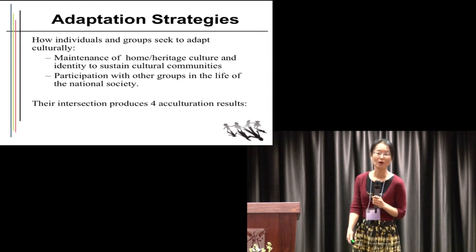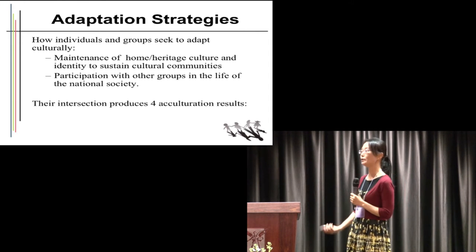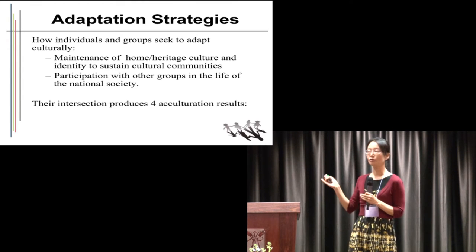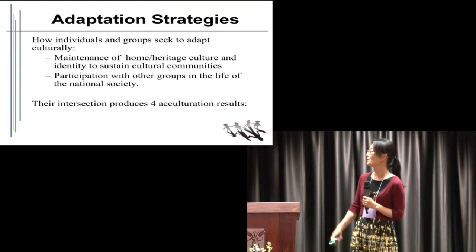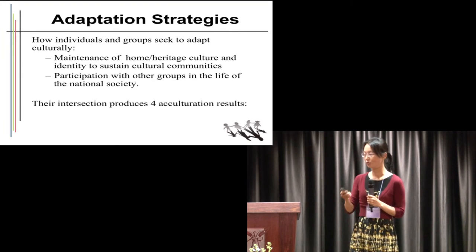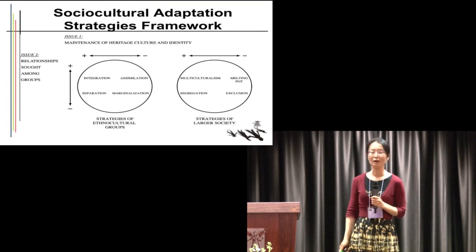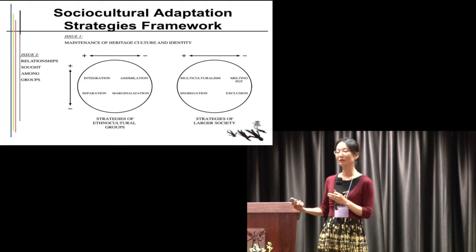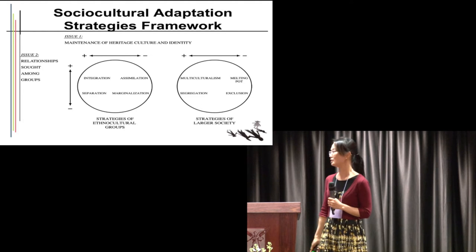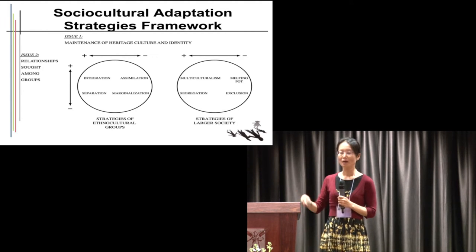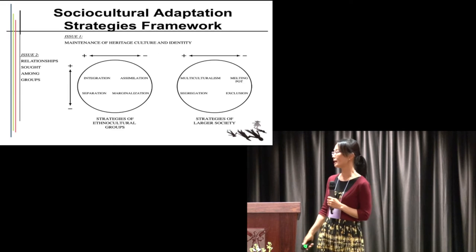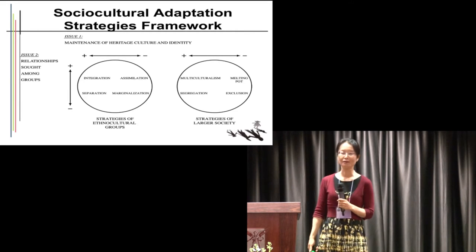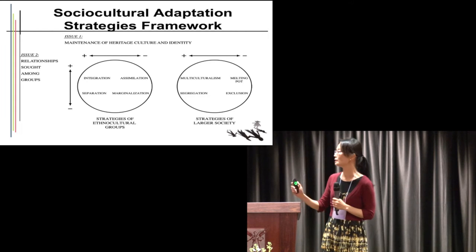On one hand, they want to maintain their home culture. On the other hand, they want to participate in the new culture. The interaction of these two dimensions actually results in four different categories, which decides what kind of person that individual will become. For example, that person may decide to integrate into this culture, or they decide they will just separate from this culture. So for individuals there will be four results: either integration, marginalization, separation, or assimilation.